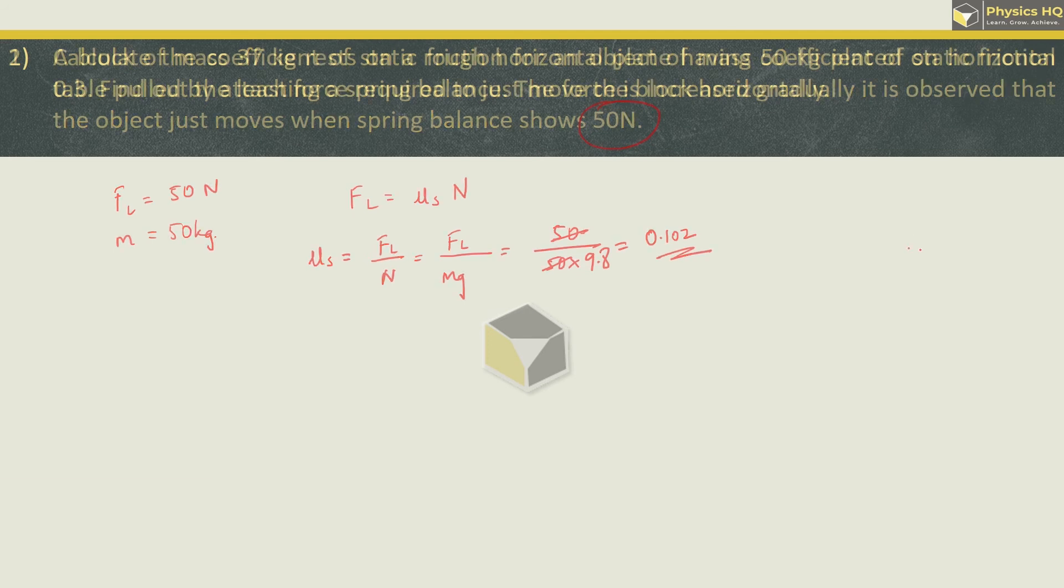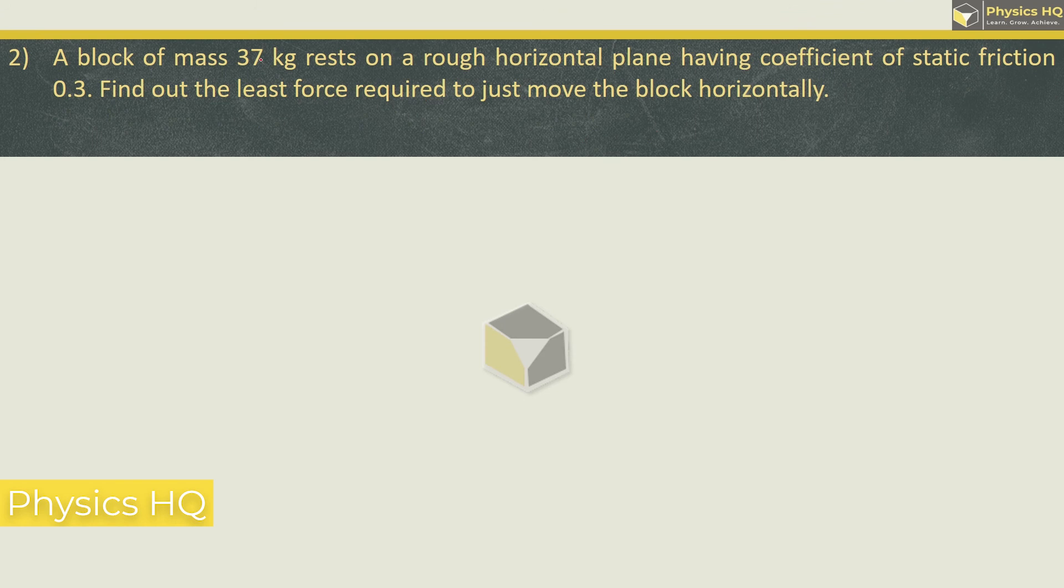Next we will see. A block of mass 37 kg rests on a rough horizontal plane having coefficient of static friction 0.3. Find out the least force required to just move the block horizontally. So here we will find the limiting force, which is equal to mu s into N.